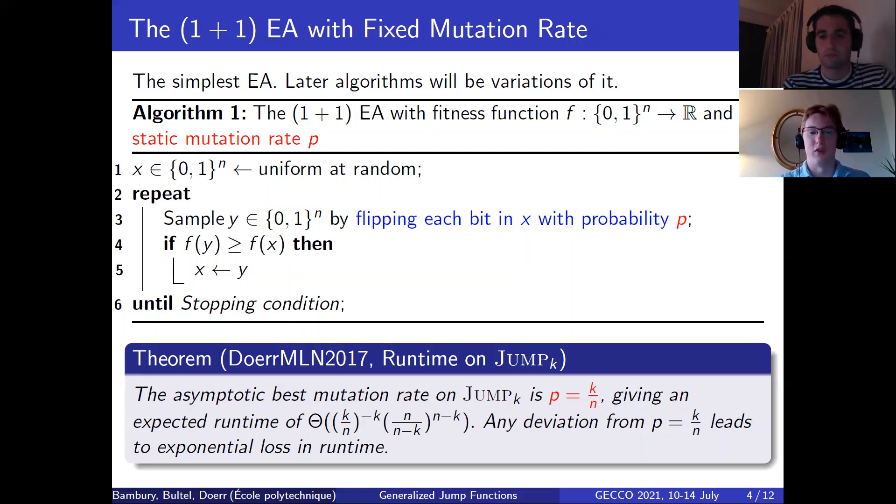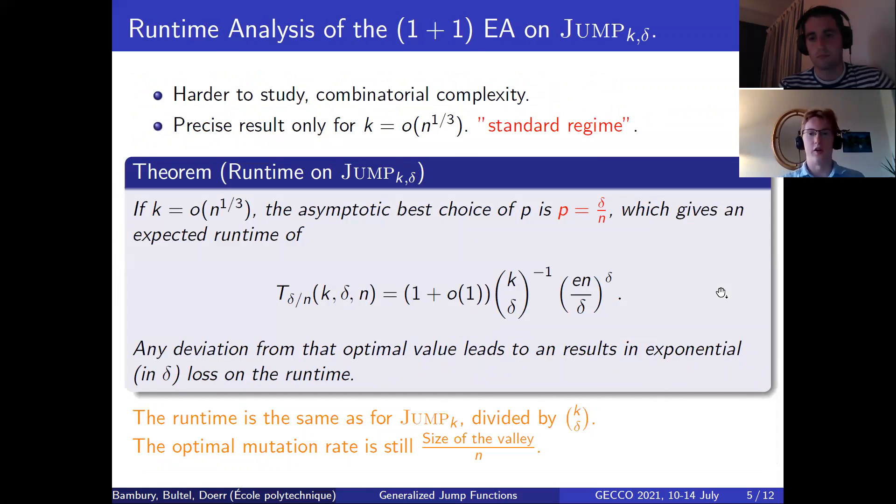This algorithm is very simple and has been studied extensively. So studies of its runtime, the number of iterations you need to reach the global optimum, has been done by Doerr, Le, and Nguyen in 2017 on the Jump_k benchmark. Their result states that the asymptotic best mutation rate for this benchmark is p equals k over n, where k is the distance between the layer of local optima and the global optimum. This gives the following expected runtime, and any deviation from this value of p will lead to an exponential loss.